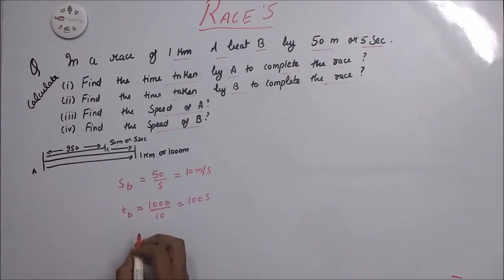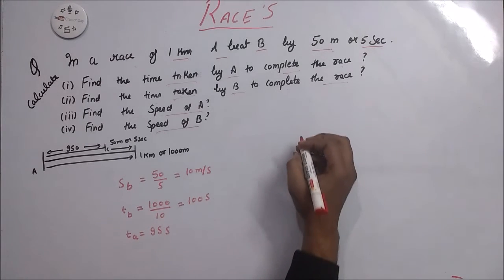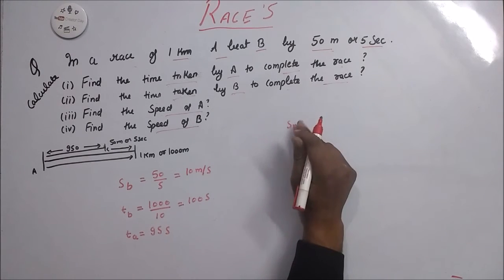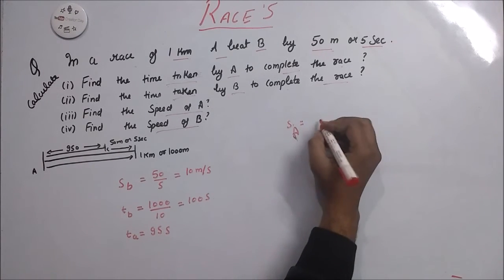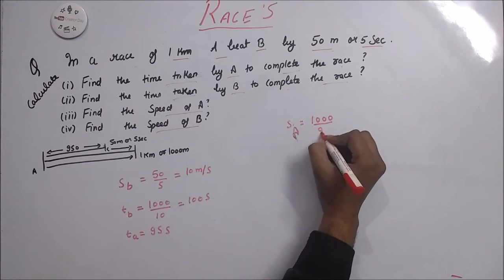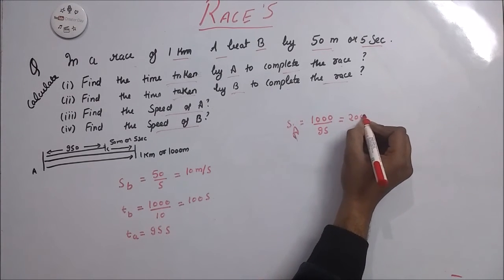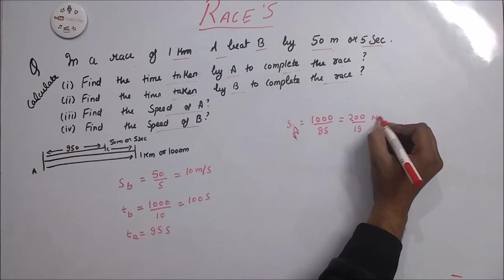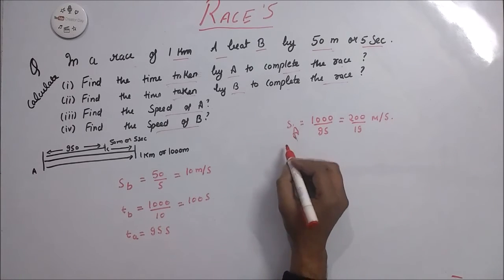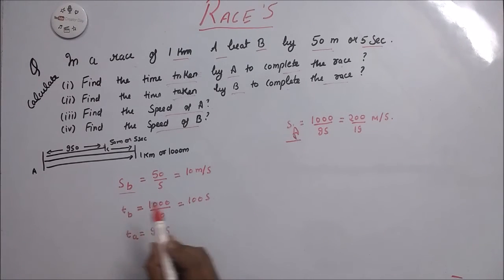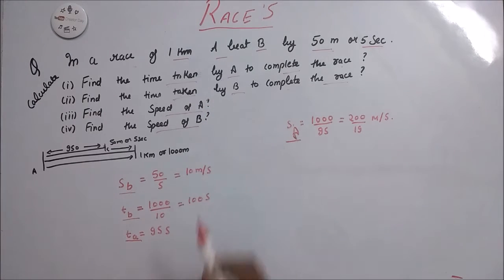And in the question it is given that time taken by A is 5 less than time taken by B, so it is 95 seconds. Now speed of A is 1000 divided by 95 which is 200 divided by 19 meters per second. Now here is speed of A, here is speed of B, time taken by A and time taken by B. All answers are given.